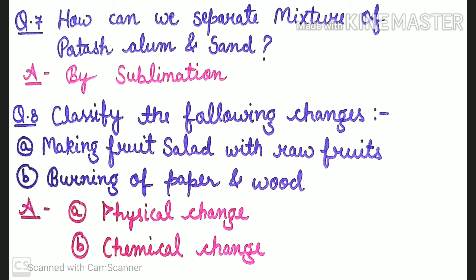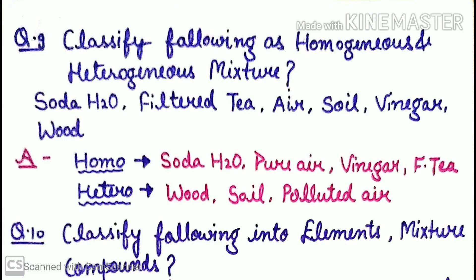Next question: classify the following changes as physical or chemical. Making fruit salad with raw fruits — you are simply making a salad and no new substance is formed, so it is a physical change, a temporary change. Burning of paper and wood — when you burn paper and wood you get ash, which is a new substance and a permanent change, so it is a chemical change.